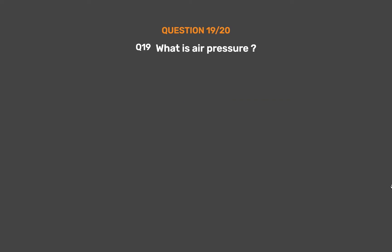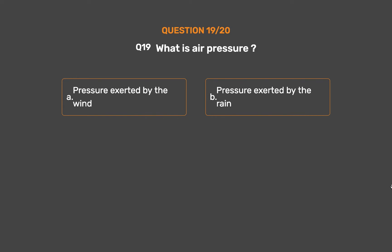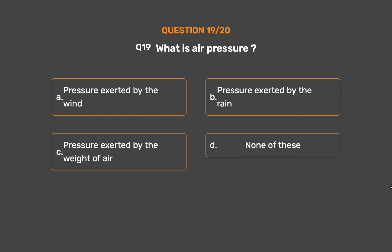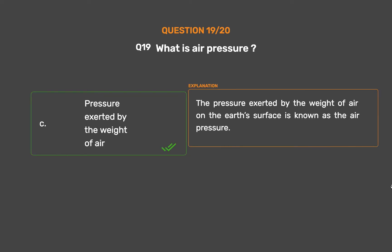Question number 19: What is air pressure? Option A: Pressure exerted by the wind. Option B: Pressure exerted by the rain. Option C: Pressure exerted by the weight of air. Option D: None of these. The correct answer is Option C. Pressure exerted by the weight of air on the earth's surface is known as air pressure.